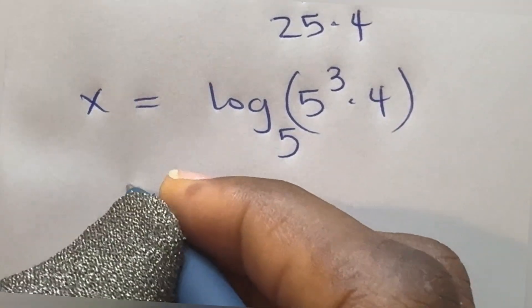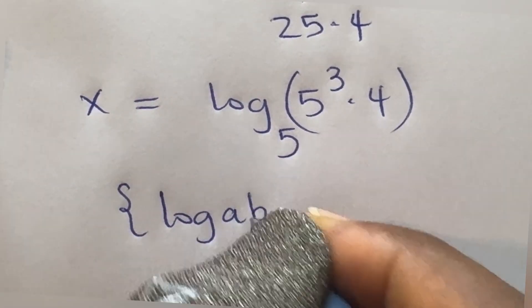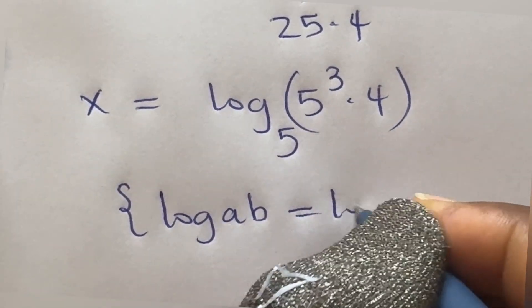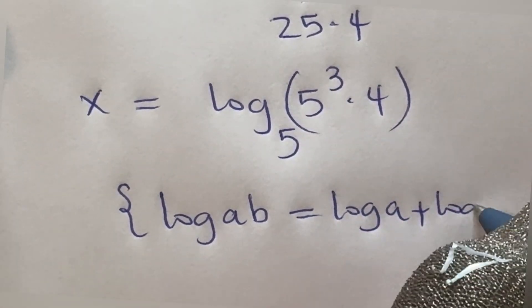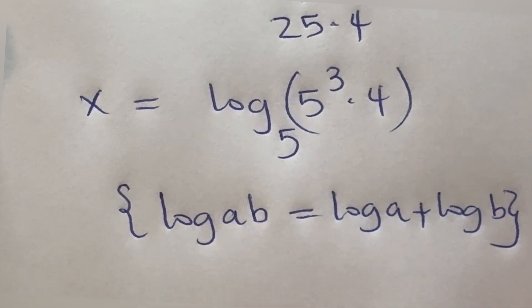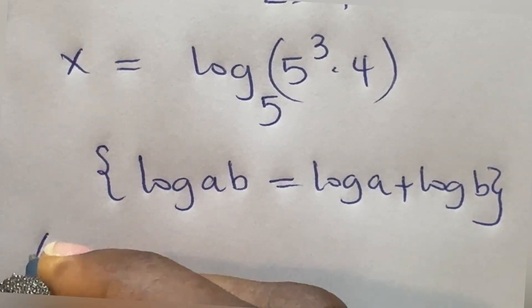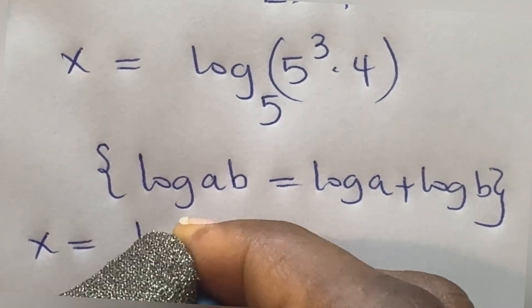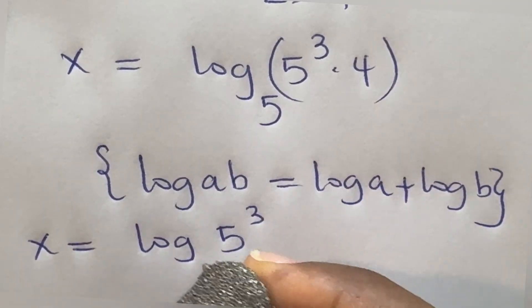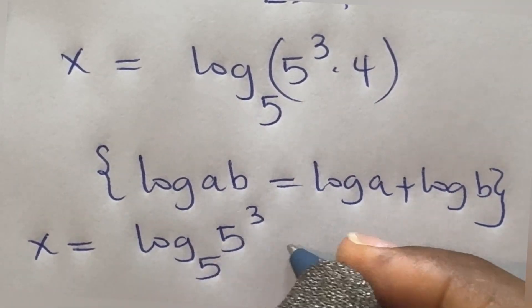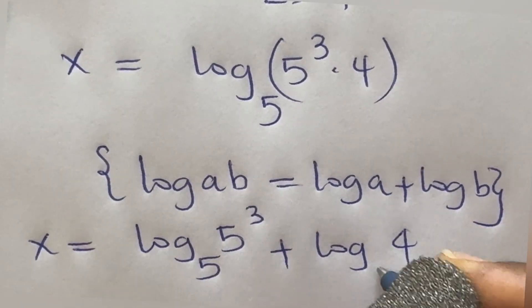We can use this law of logarithm: log a times b equals log a plus log b to expand these brackets. This will give us x is equal to log 5 raised to power 3 base 5 plus log 4 base 5.